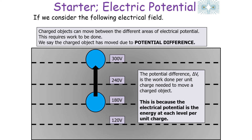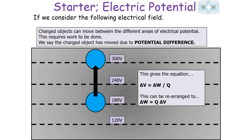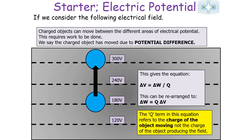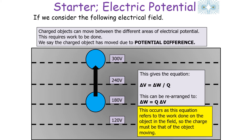The electrical potential is the energy at each level per unit charge, so the potential difference is the work done per unit charge needed to move a charged object. This gives us the equation: potential difference equals work done over charge, or equivalently, work done equals charge times potential difference (W = QV). The charge term in this equation refers to the charge of the object moving, not the charge of the object producing the field.